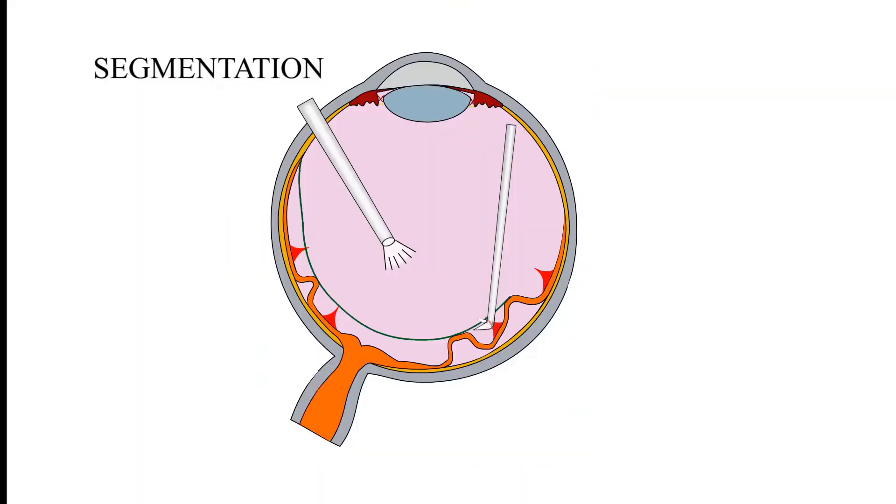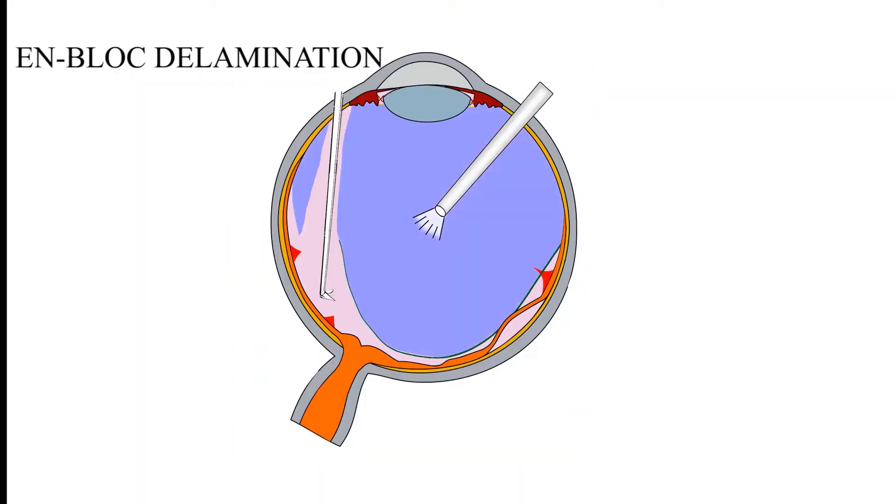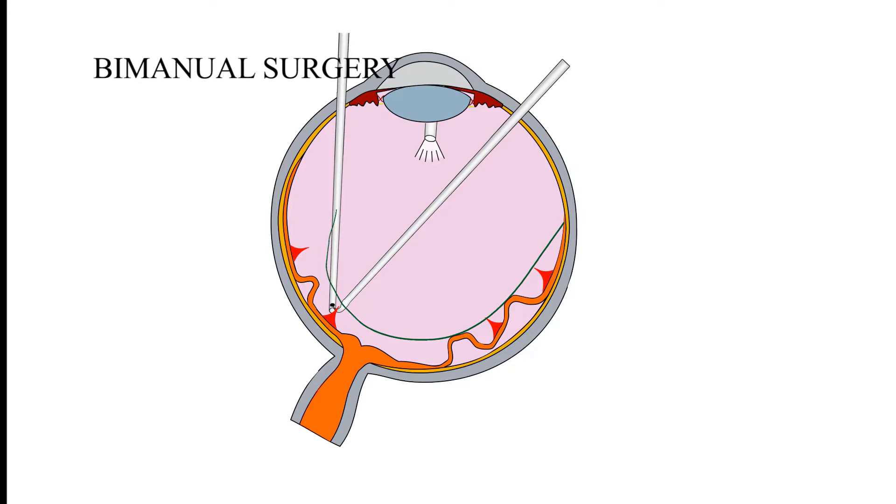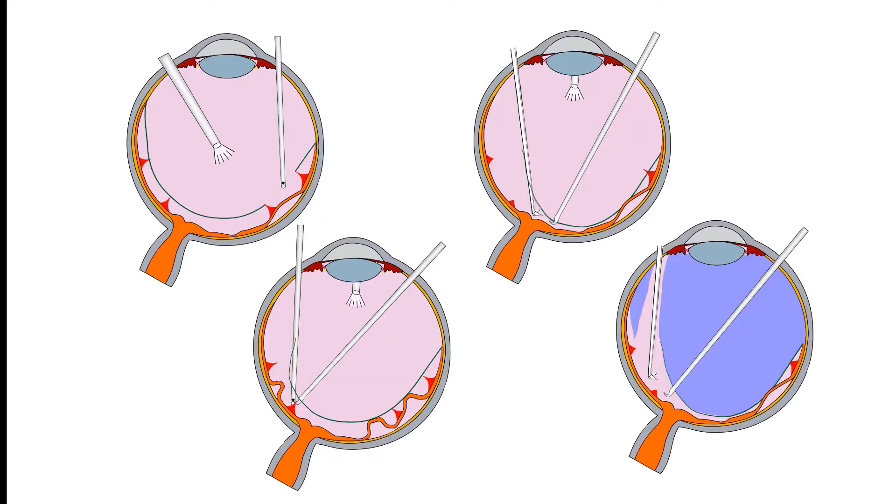This can be accomplished by segmentation, delamination, en-block delamination and bimanual dissection. We are demonstrating these techniques through this video highlighting the multifunctionality of the vitrectomy probe.